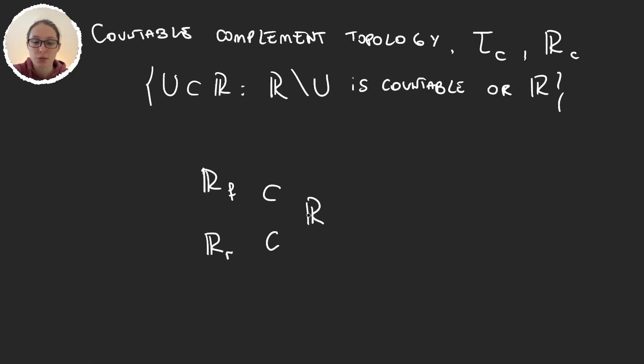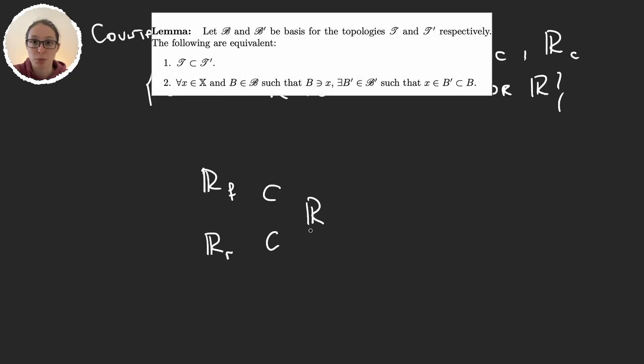Now, to prove these inclusions, we will use the lemma we saw at the end of the video about basis of a topology. I'm leaving the image of that lemma in the screen right now. So basically what we have to do is take one element in the basis of Rf, or R sub R, that is a neighborhood of some element in the real numbers, and prove that there exists another basis element now in the standard topology that contains the element x, and that is a subset of the other element we grabbed in the first place.